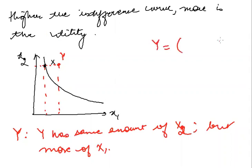So for example, my y can be 3,5 and my x can be 1,5. So y has three units of good one and five units of good two, and x has one unit of good one and five units of good two.